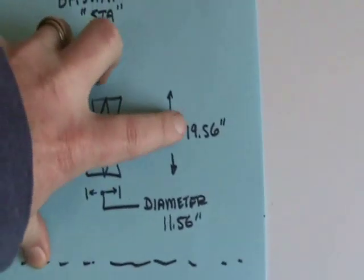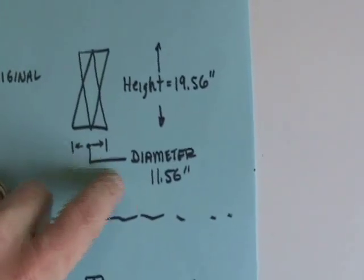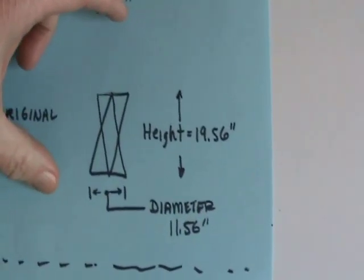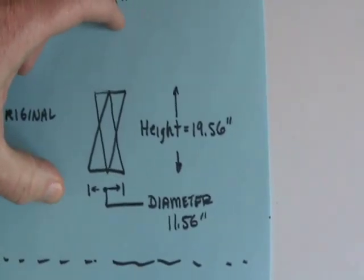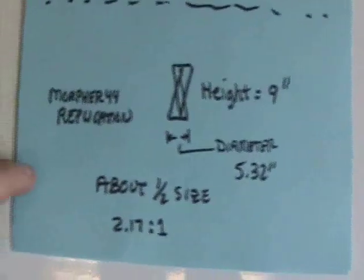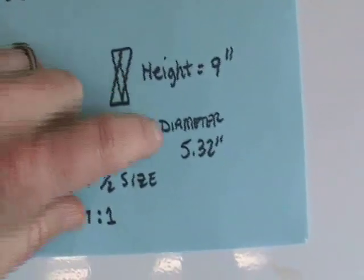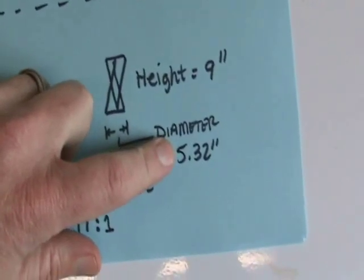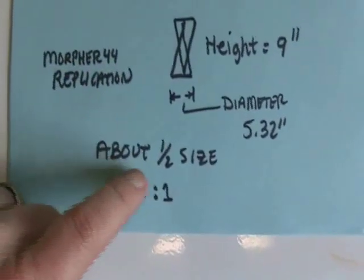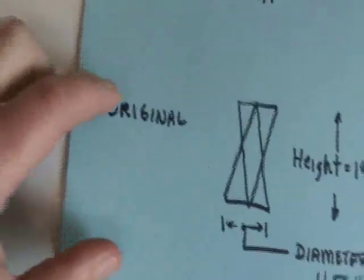The tetrahedron that this fits in is three feet tall. My replication has a height of nine inches and a diameter of 5.32 inches, so I'm about half the size of the one that you're supposed to build.